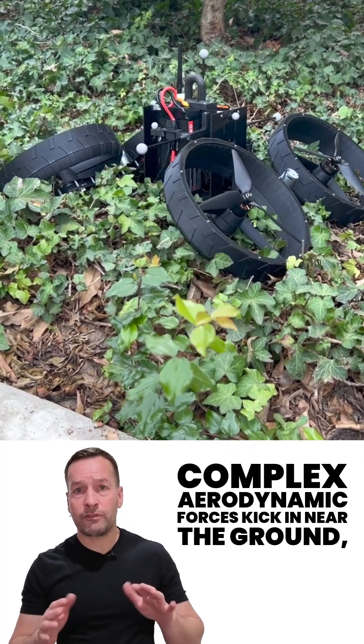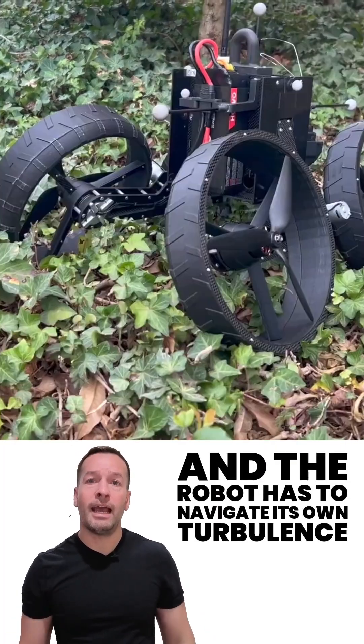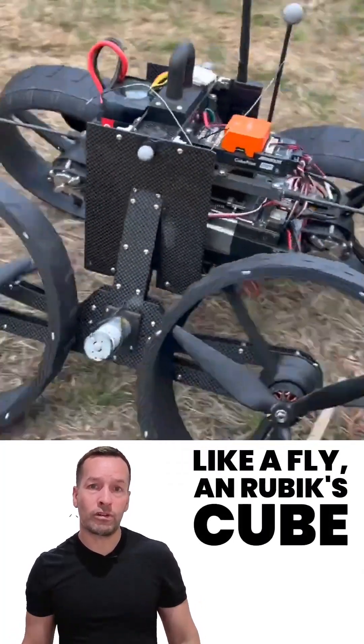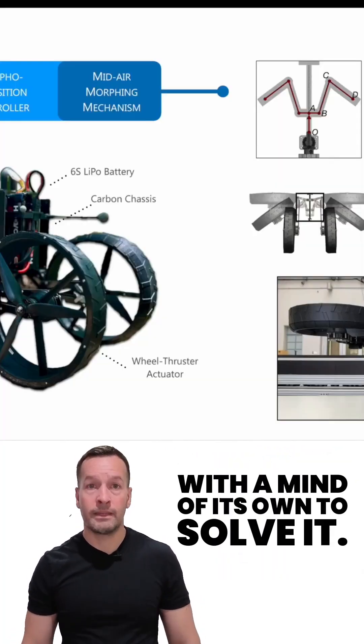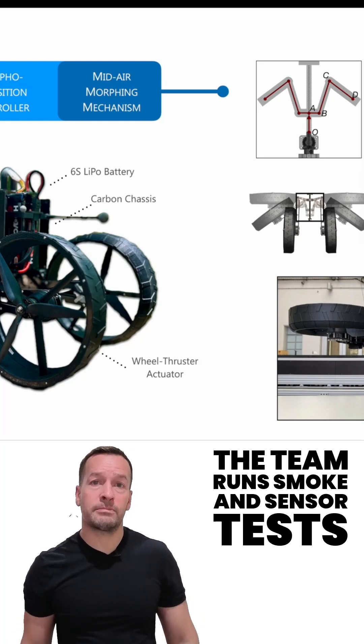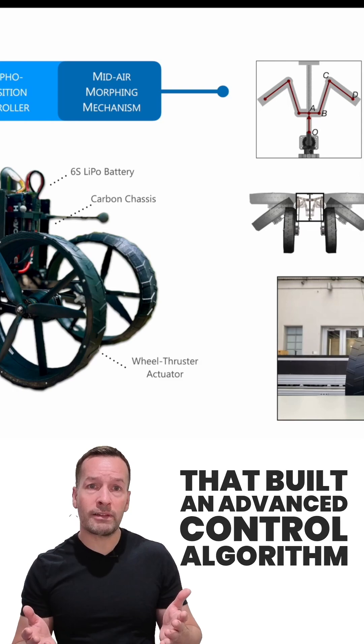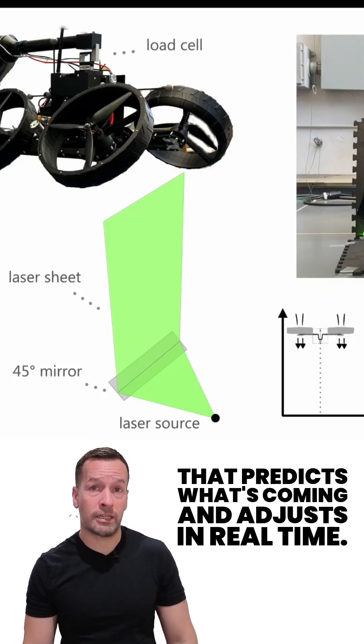Complex aerodynamic forces kick in near the ground and the robot has to navigate its own turbulence like a flying Rubik's Cube with a mind of its own. To solve this, the team ran smoke and sensor tests that built an advanced control algorithm that predicts what's coming and adjusts in real time.